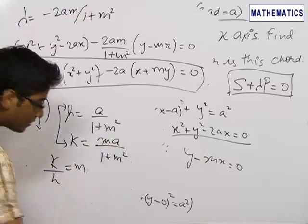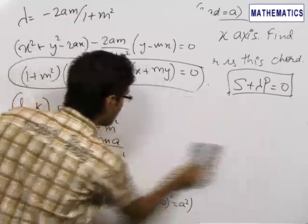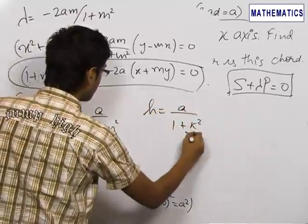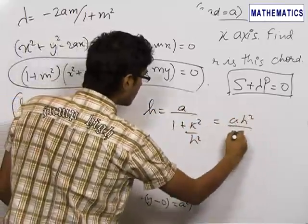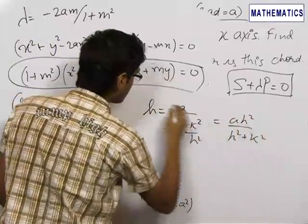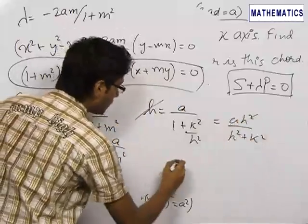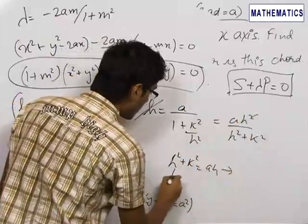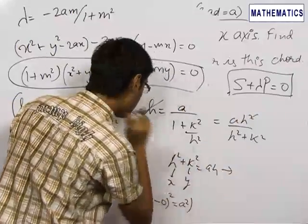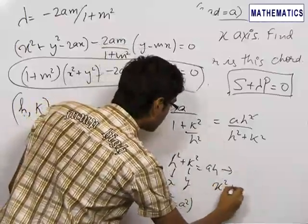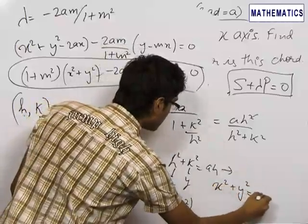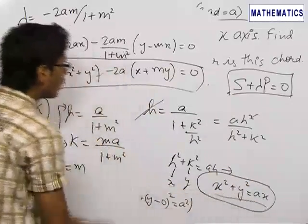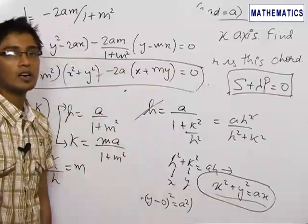Putting the value of m into the equation for h, we get h equals a upon (1 plus k squared/h squared), that is ah squared upon (h squared plus k squared). The h terms cancel, giving h squared plus k squared equals ah. Replacing h by x and k by y as we always do, we get x squared plus y squared equals ax, which is the desired locus of the center.